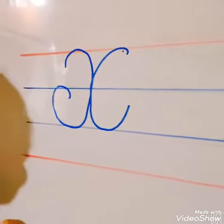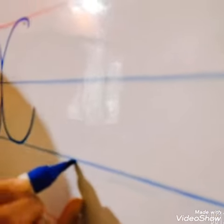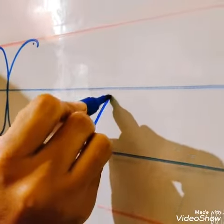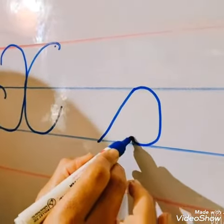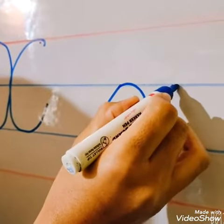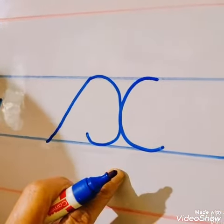Now I will show you how to write the small cursive X. One slant line from third line to second line. Then one curve, leave the pencil, draw one more curve from the right side. This is our small cursive X.